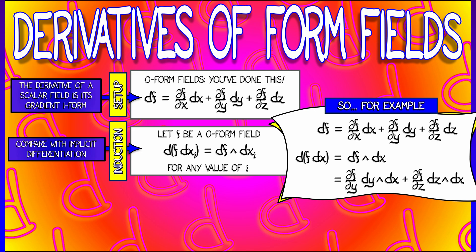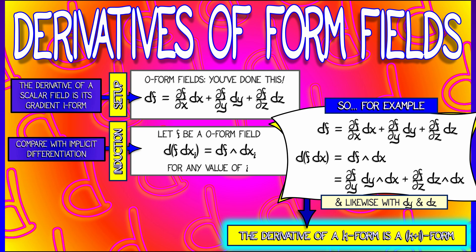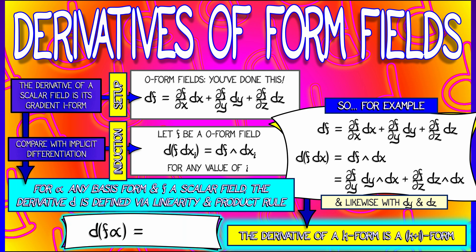Notice how I'm being really careful with the order here, as I must. And notice that the derivative of this one-form field is really a two-form field, in the same way that the derivative of a zero-form field was a one-form field in general. The derivative takes a k-form field to a k plus one-form field. And the way that we do this, in general, is inductively. If alpha is any basis form, and if f is a scalar field, a zero-form field, then the derivative of f times alpha is defined to be df wedge alpha, using the process that we have just seen for one-forms.